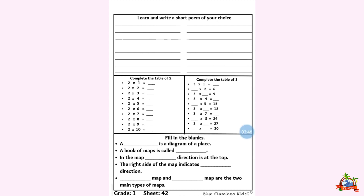Now continue with the table of four. Four ones are four. Four twos are eight. Four threes are twelve. Four fours are sixteen. Four fives are twenty. Four sixes are twenty-four. Four sevens are twenty-eight. Four eights are thirty-two. Four nines are thirty-six. Four tens are forty.